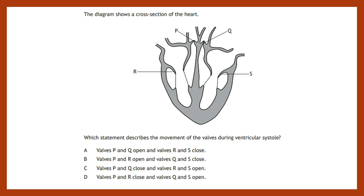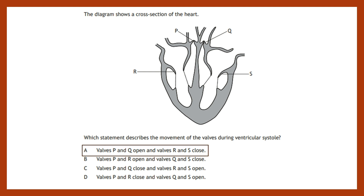If the ventricles are contracting, they're pushing blood up into the arteries, so you need the AV valves closed and the semi-lunar valves open. Therefore, P and Q are open and R and S are closed.